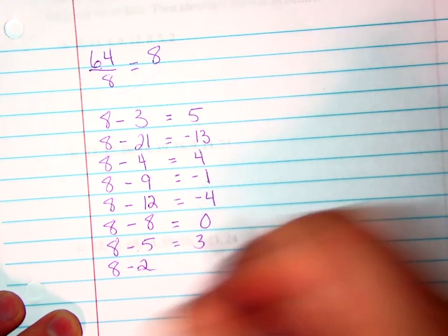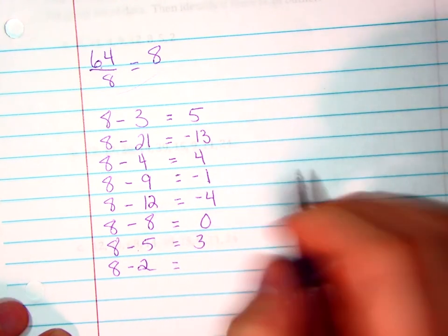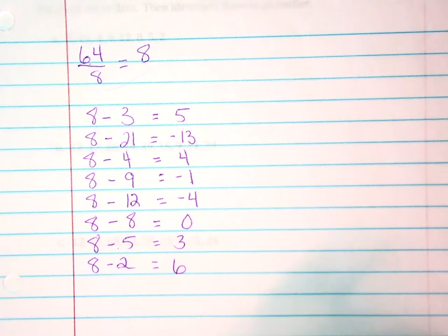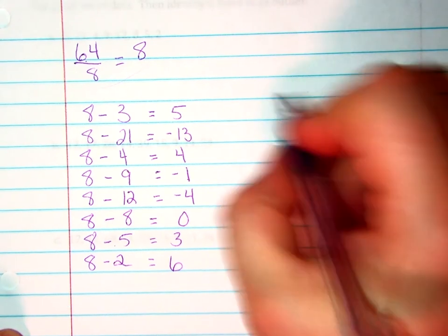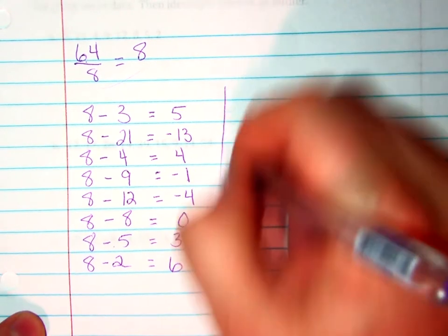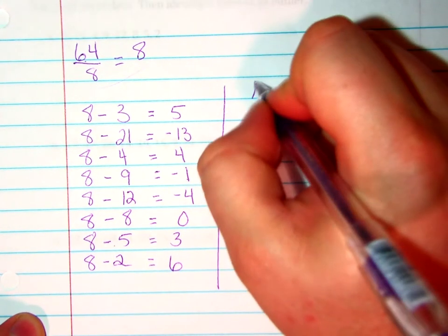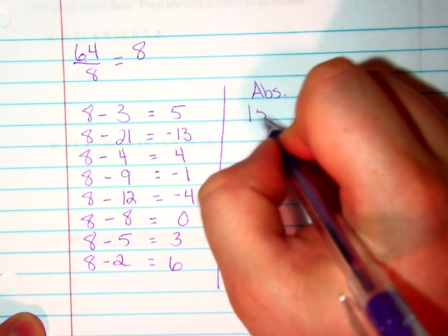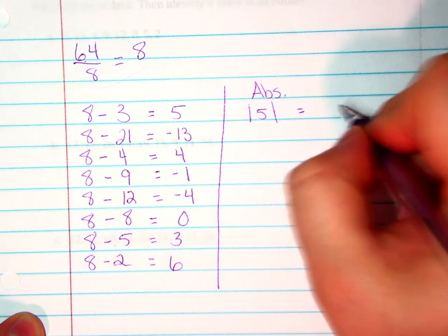My next step is to take the absolute value of each of these terms. I'm going to draw a straight line and do absolute value. The absolute value of 5 equals 5, the absolute value of negative 13 equals 13.